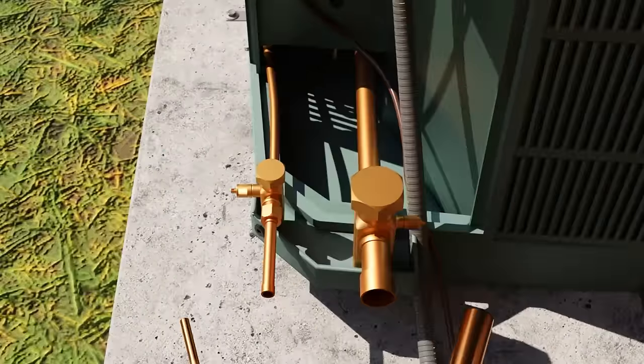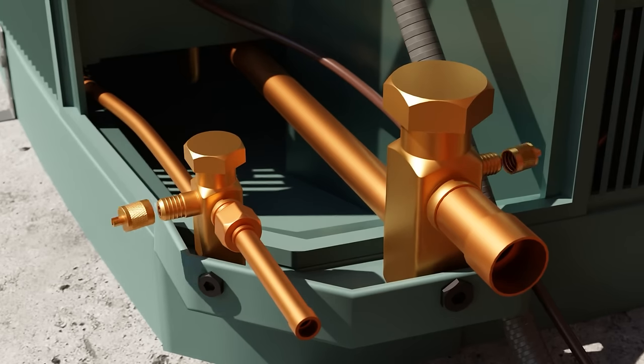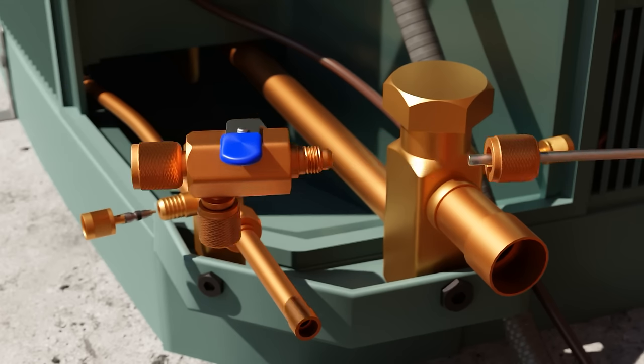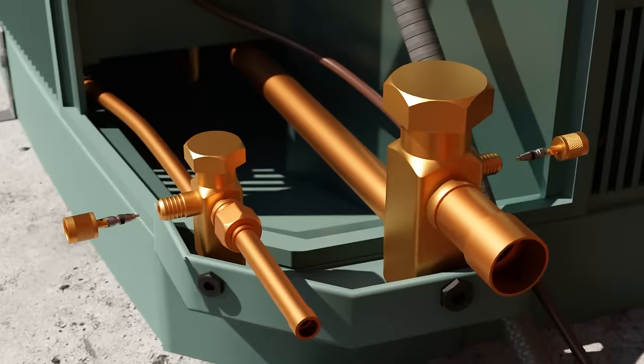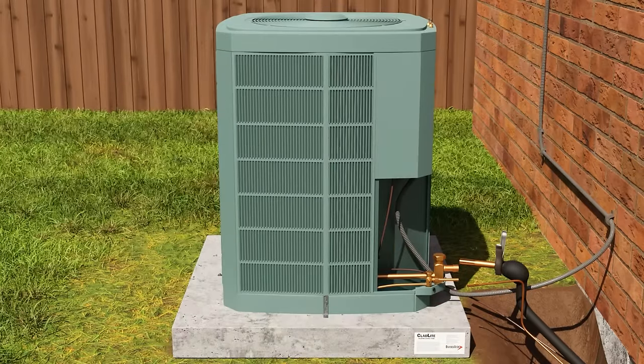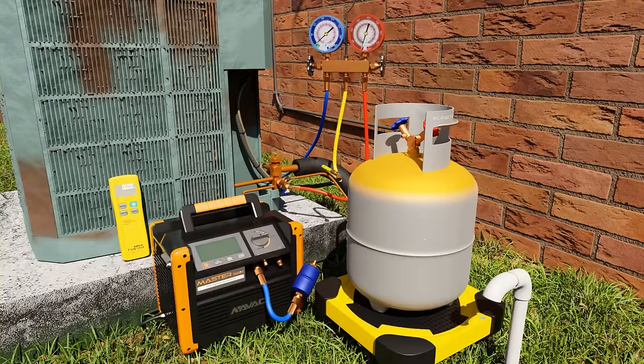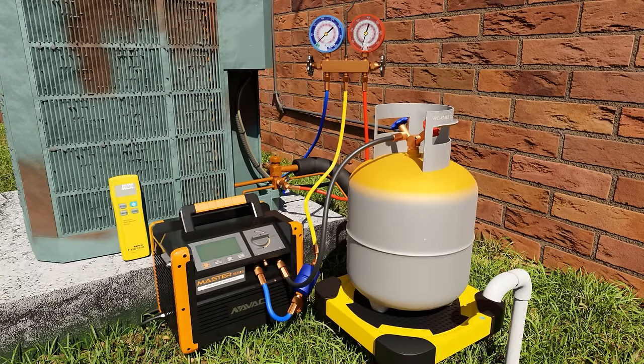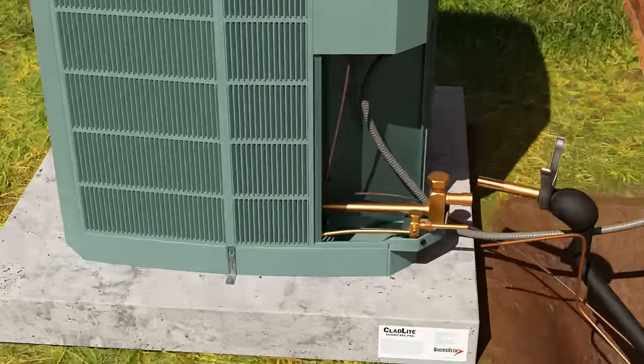First, when brazing, remove any Schrader cores to ensure that you don't build up any pressure in the system which can blow out your braze. You can also use the insert of a core remover tool to remove cores. In this case we're showing a new condenser that doesn't have refrigerant in it already. If you're working on a system that had refrigerant in it prior, make sure to follow proper recovery practices and get the system to atmospheric pressure before proceeding.